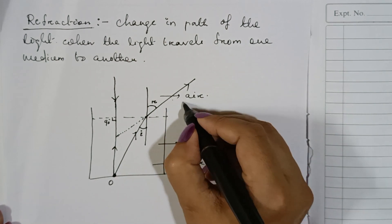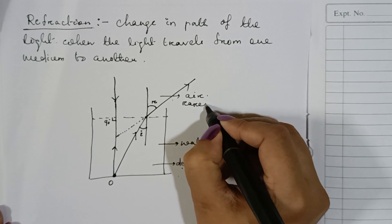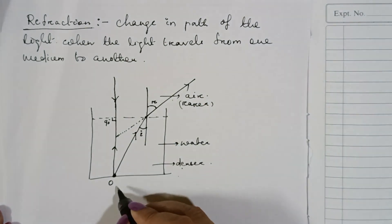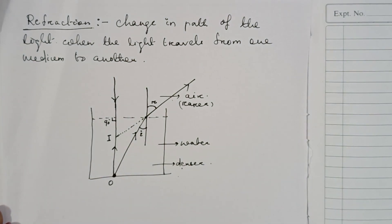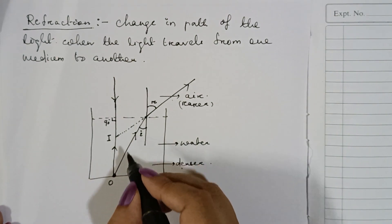And it is moving from denser to rarer medium. It bends away from normal. And you do the backward extension. You will get the image over here. So that's why here what happens?